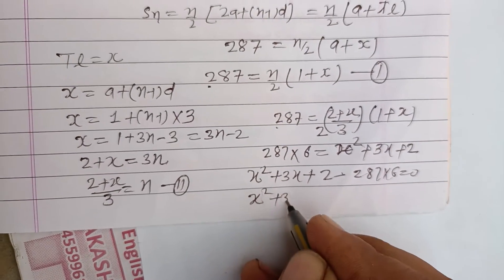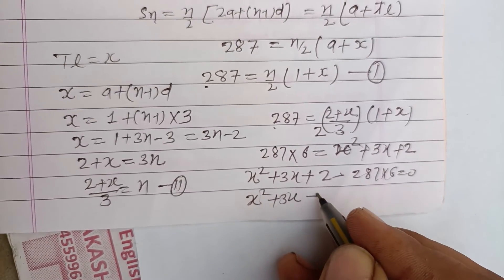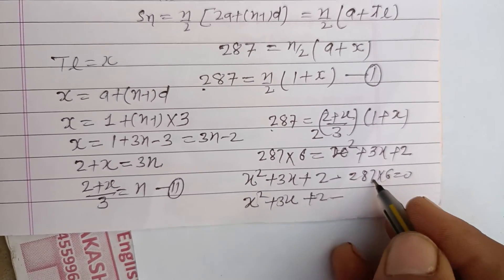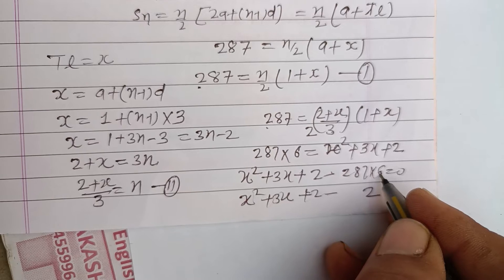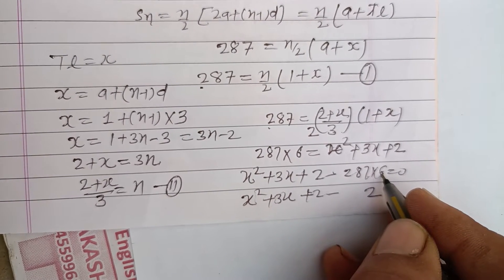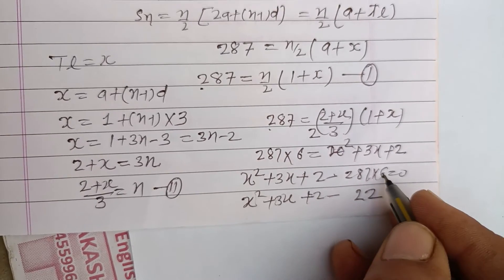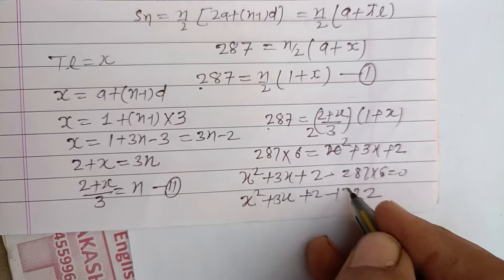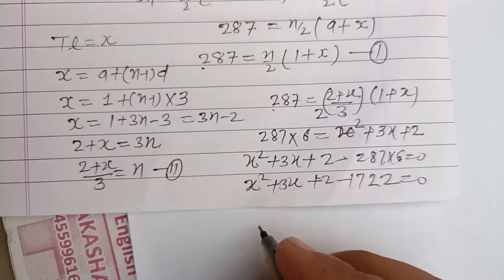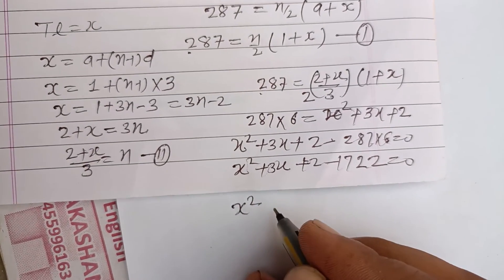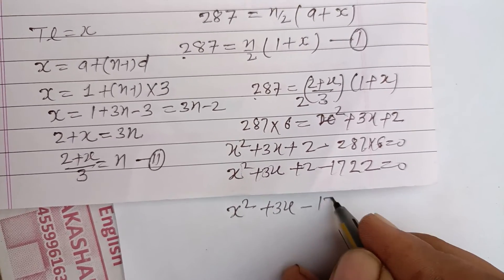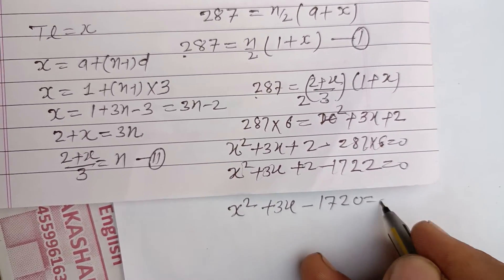Computing 287 times 6: 6 times 7 is 42, 6 times 8 is 48, giving 1720 plus 2 equals 1722. So finally we get the equation x squared plus 3x plus 2 minus 1722 equals 0, that is x squared plus 3x minus 1720 equals 0.